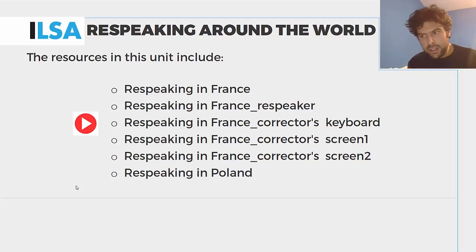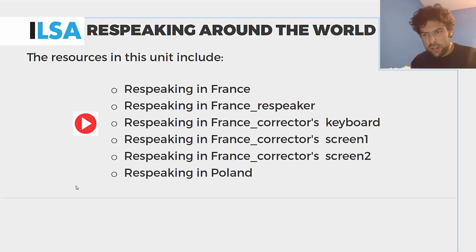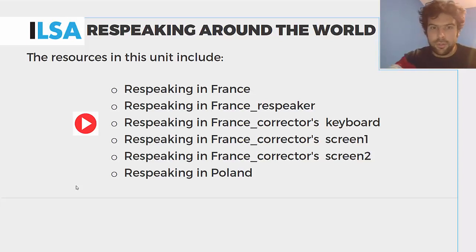In contrast, in France, between three and four people are involved in the production of live subtitles. Once the re-speaker has dictated to the speech recognition software, the subtitles are read by a second operator called the whisperer, who whispers potential corrections to a third operator called the corrector. This is a way to ensure high accuracy in the production of live subtitles, although this comes at the expense of increasing the delay.